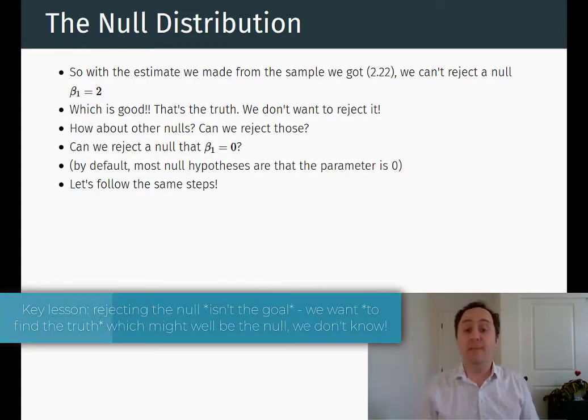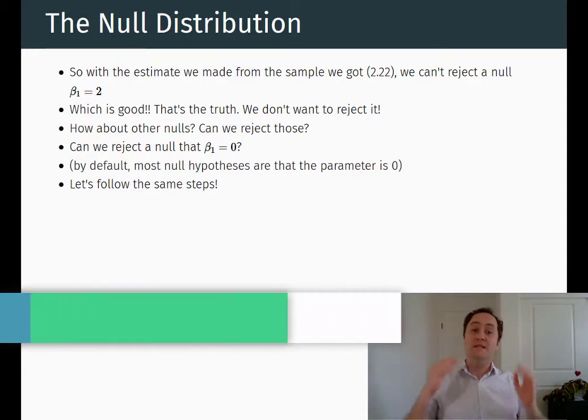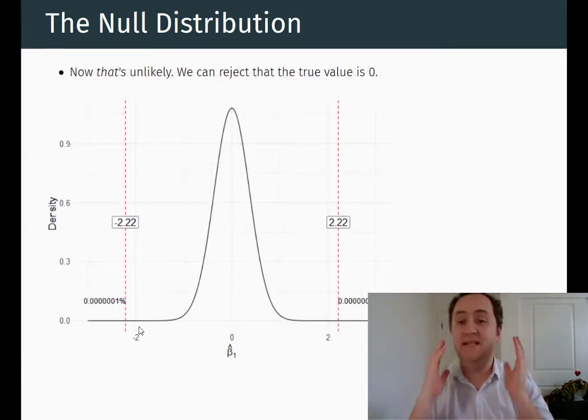So we don't want to be able to reject it. Note, by the way, that by not rejecting 2, we're not claiming that 2 is, in fact, the truth. We're just saying that we did not have the evidence to show that it wasn't the truth. Now, we couldn't reject 2, but let's try testing against a different null. Let's say that we're going to test whether the coefficient is 0 or not.